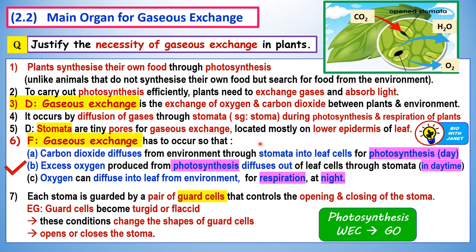Gaseous exchange is necessary so that carbon dioxide can diffuse from the environment or atmosphere through the stomata into leaf cells for photosynthesis during daytime, and excess oxygen produced from photosynthesis can diffuse out of the leaf cells through the stomata. This also occurs in the daytime when photosynthesis is taking place.